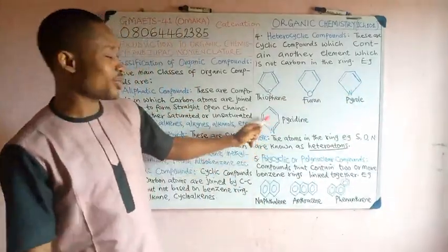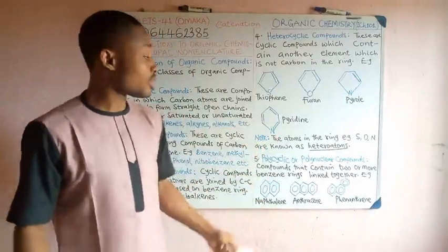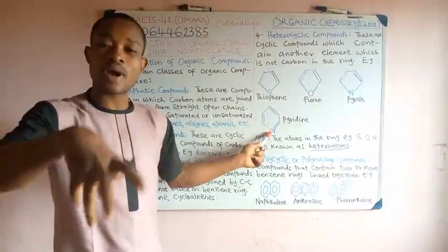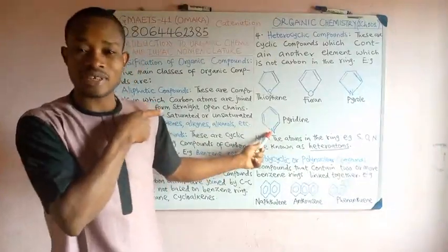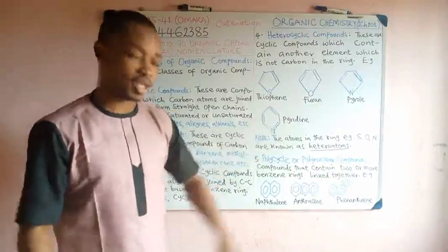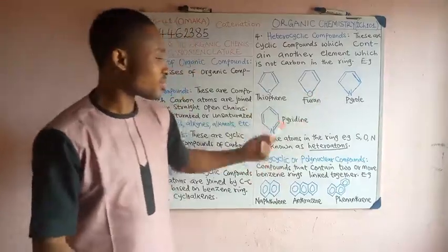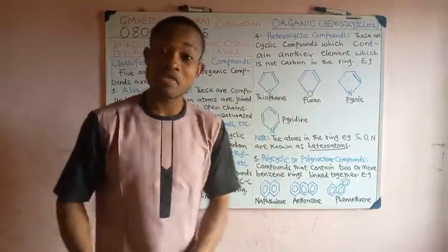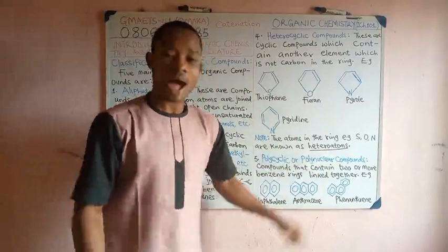We call this pyridine. You see, this one looks like benzene, but it's not benzene because the sixth point that should be occupied by carbon which could have made this benzene is now replaced with nitrogen. So this is pyridine. All these atoms that are not carbon, sulfur, oxygen, nitrogen, we refer to them as heteroatoms.